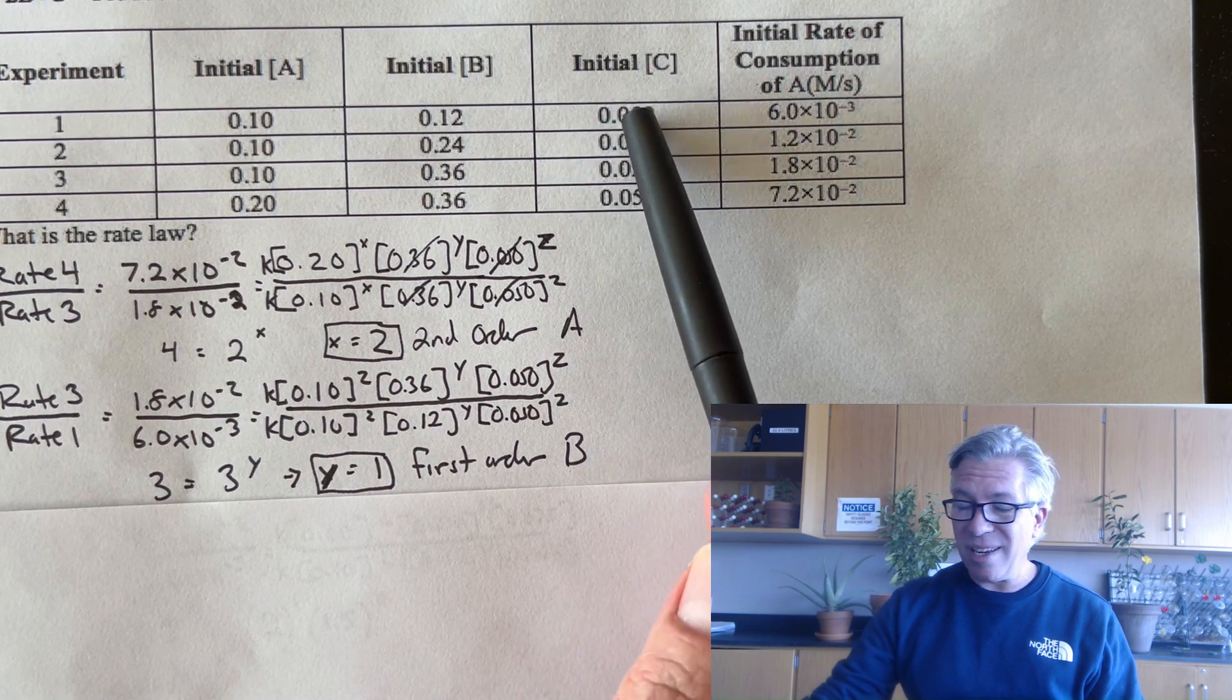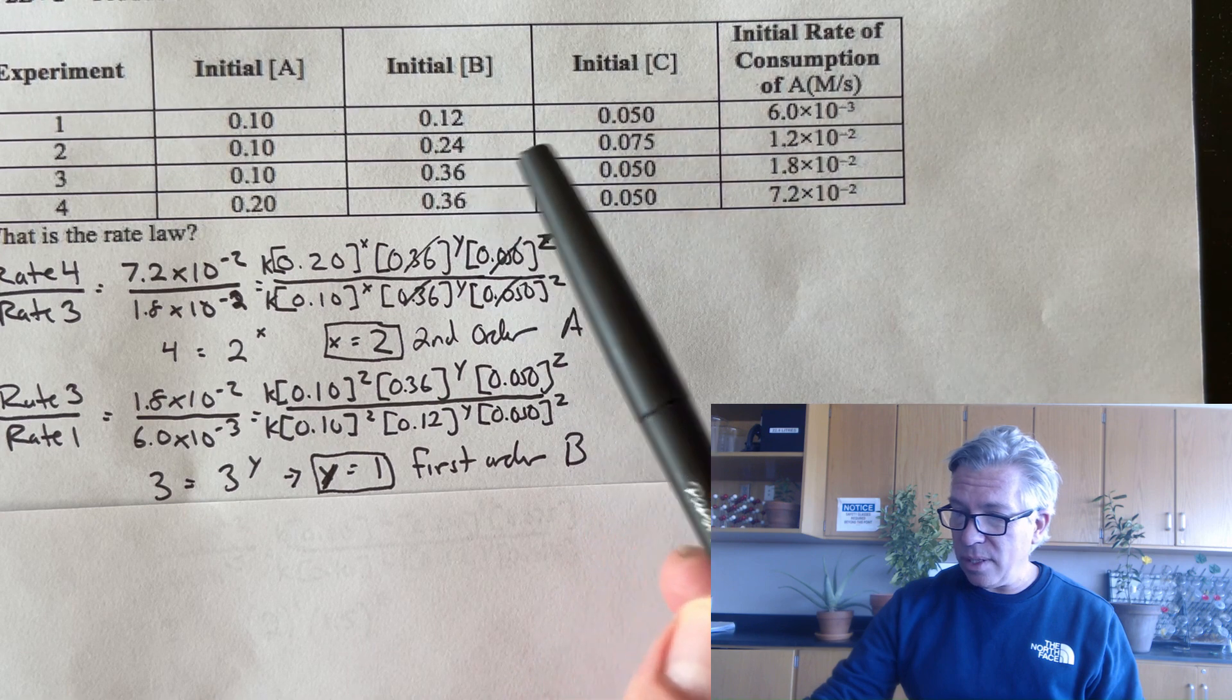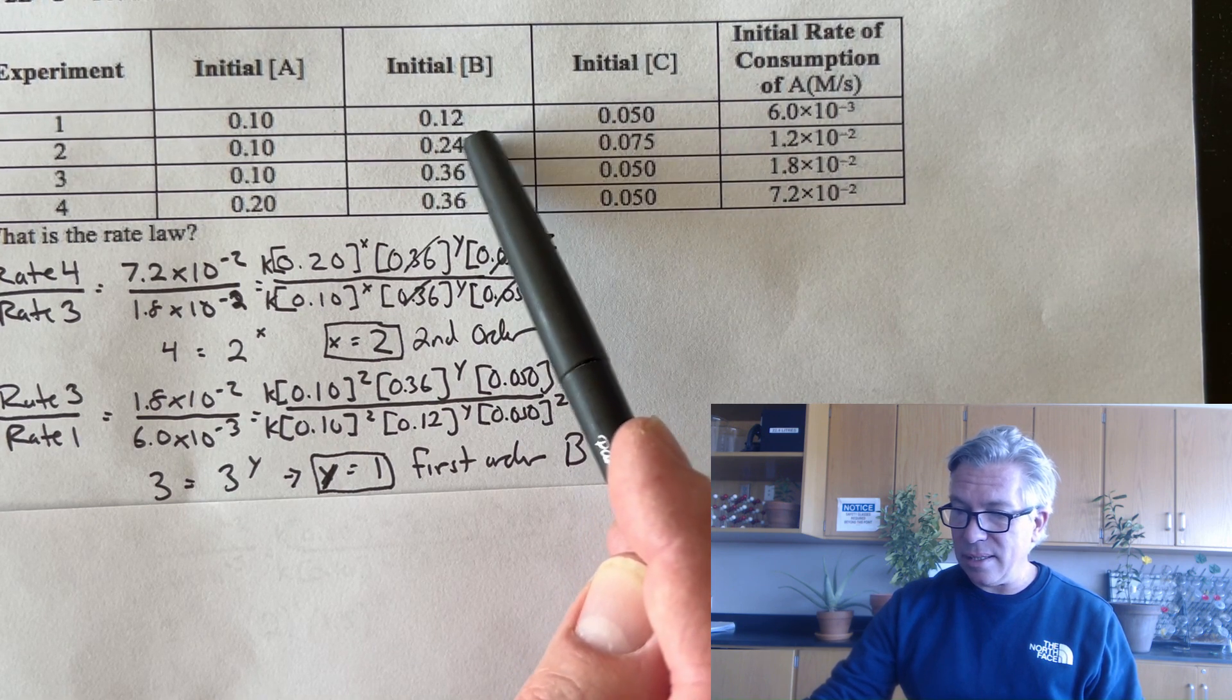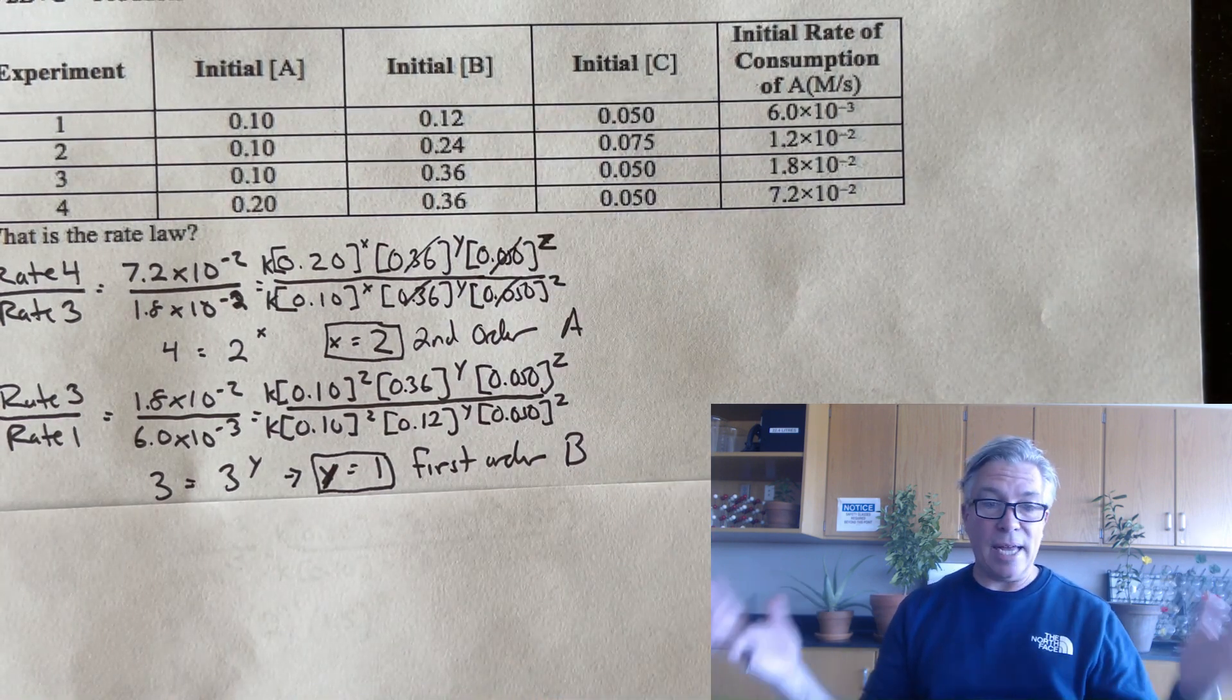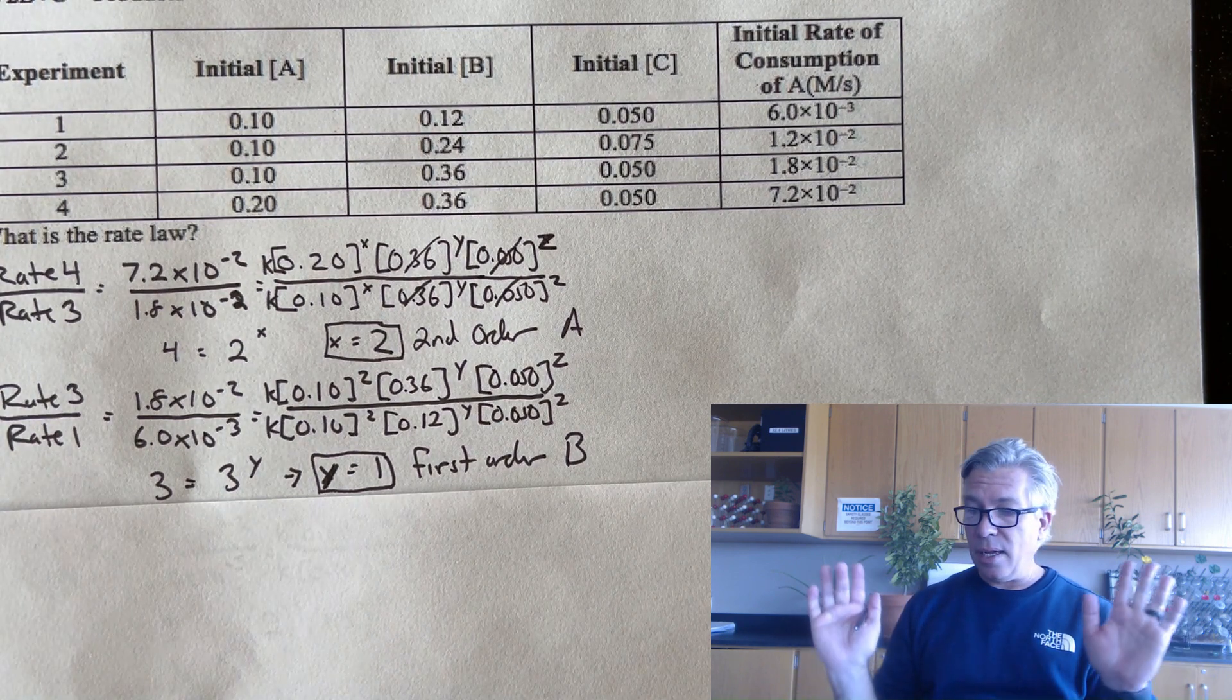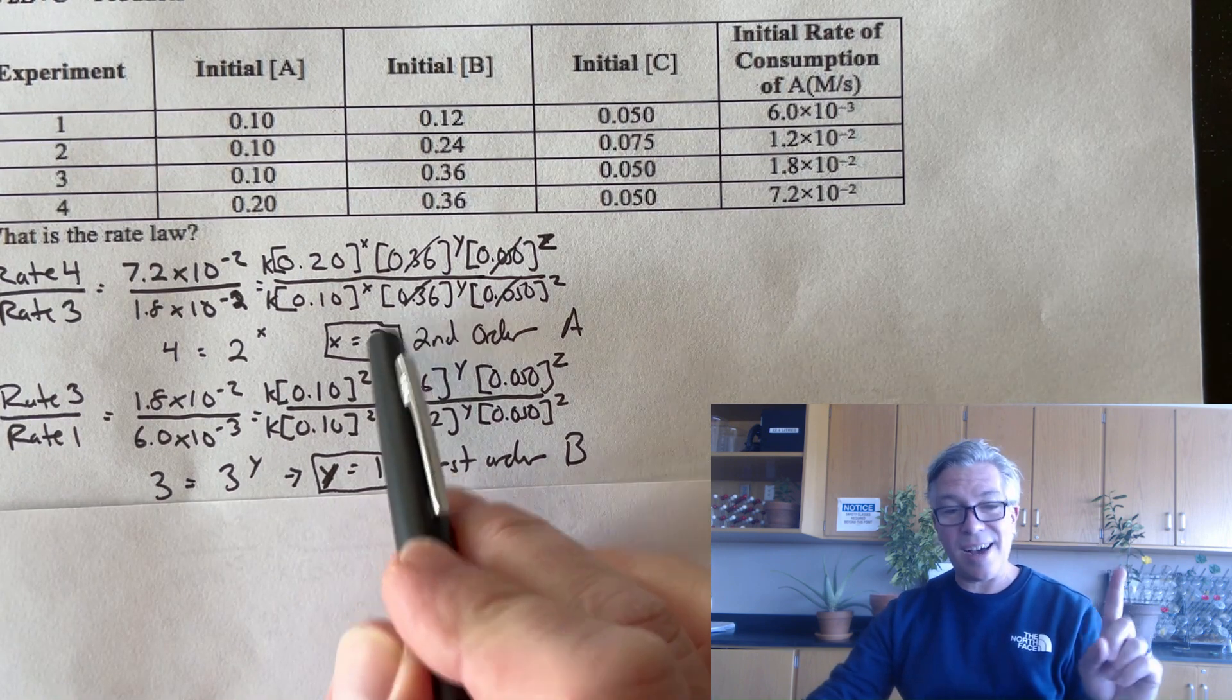Then you might have gotten to this point and started panicking because there's no two trials in which C changes while everything else stays the same. Did you notice that? You only have one that's different, and it's not the same in any of the other trials. So we get to this problem where it's like, oh my gosh, panic. So what do we do? Well, first, we take a deep breath. As long as I know the other two exponents, the orders, I'm okay. The math is a little more annoying, but that's all right.